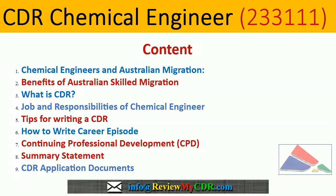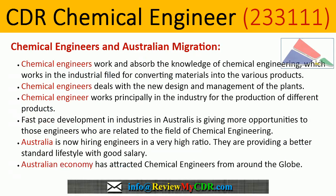Chemical engineers work and absorb the knowledge of chemical engineering, which works in the industrial field for converting materials into various products. Chemical engineers deal with the new design and management of plants. Chemical engineers work principally in the industry for the production of different products.